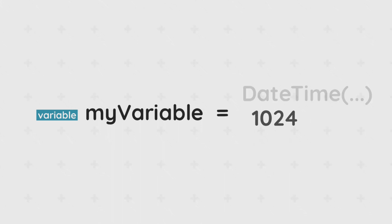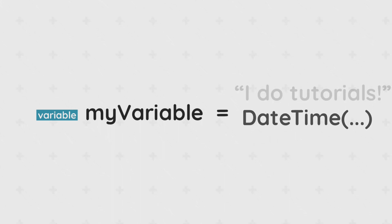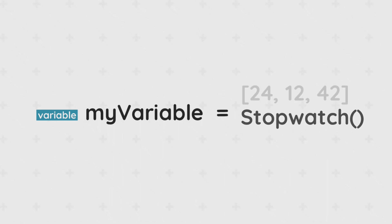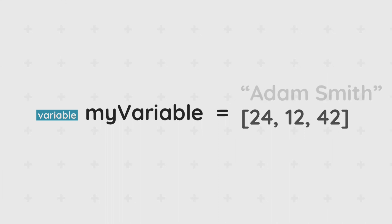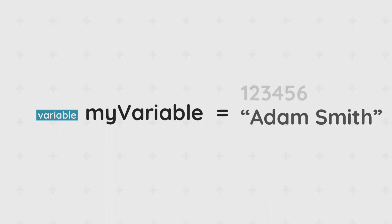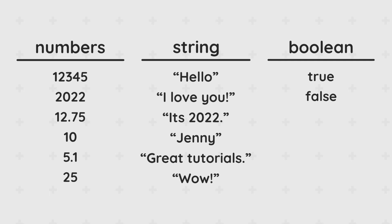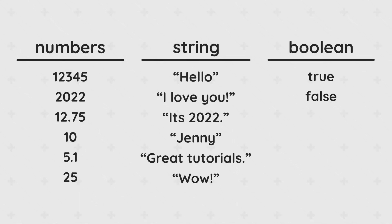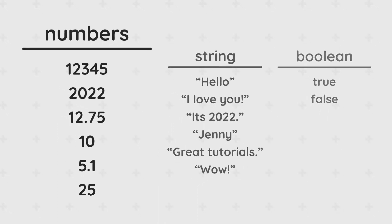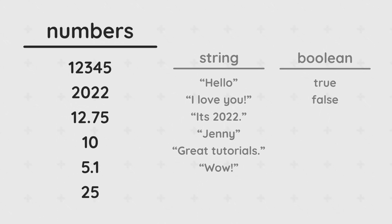A data type is basically the kind of information or value a variable can be assigned with. There are a lot of them, but most can only be accessed through scripting, so we'll only focus on the basic ones. The three basic data types you should know are numbers, string, and boolean.